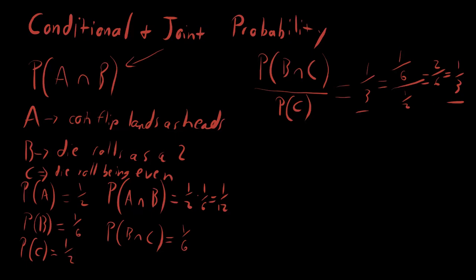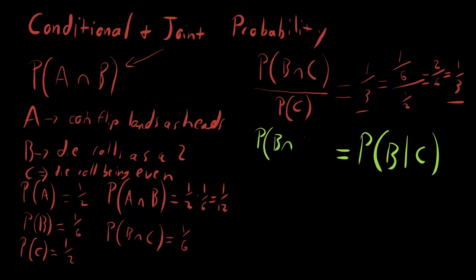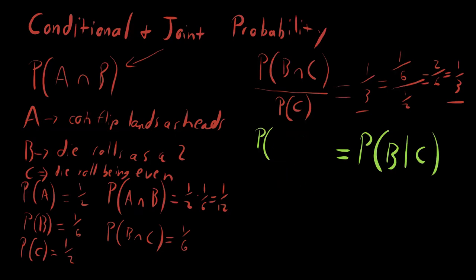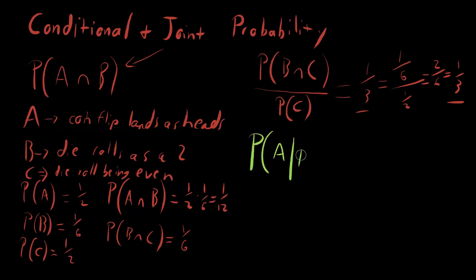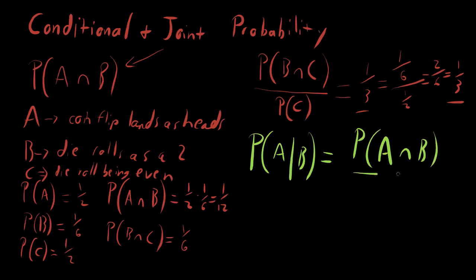That's quite cool. We define this expression as the conditional probability — what's the probability that B occurs knowing that C occurs? And this is equal to the joint probability of B and C divided by P(C). More generally, the probability that some event A occurred knowing that some event B occurred is equal to the joint probability of A and B divided by the probability of B.